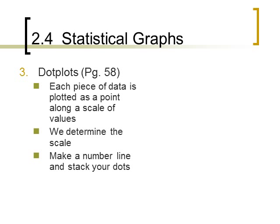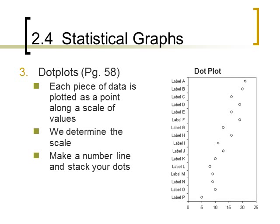Next, we want to see about dot plots. A dot plot is really easy to construct. You'll see a picture of one in your book on page 58. In a dot plot, each piece of data is plotted as a point along a scale of values. So we actually just make a number line. You can go up by fives or tens or you can go up by ones, and you plot each point above it. So however many fives, if you have the number five in your data, you put a little dot above the number five. So it's a number line and you just stack the dots above it.